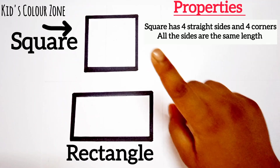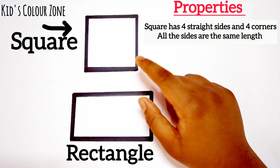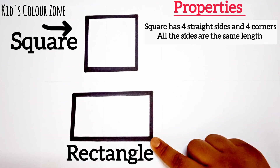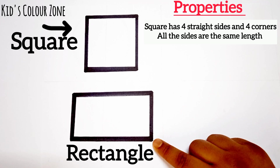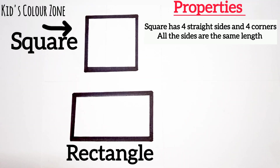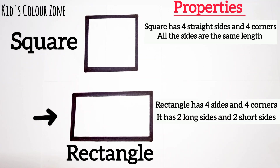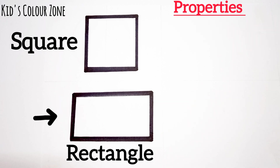A square has 4 sides and 4 corners. All the sides are the same length. This is a rectangle. A rectangle has 4 sides and 4 corners. It has 2 short sides and 2 long sides.